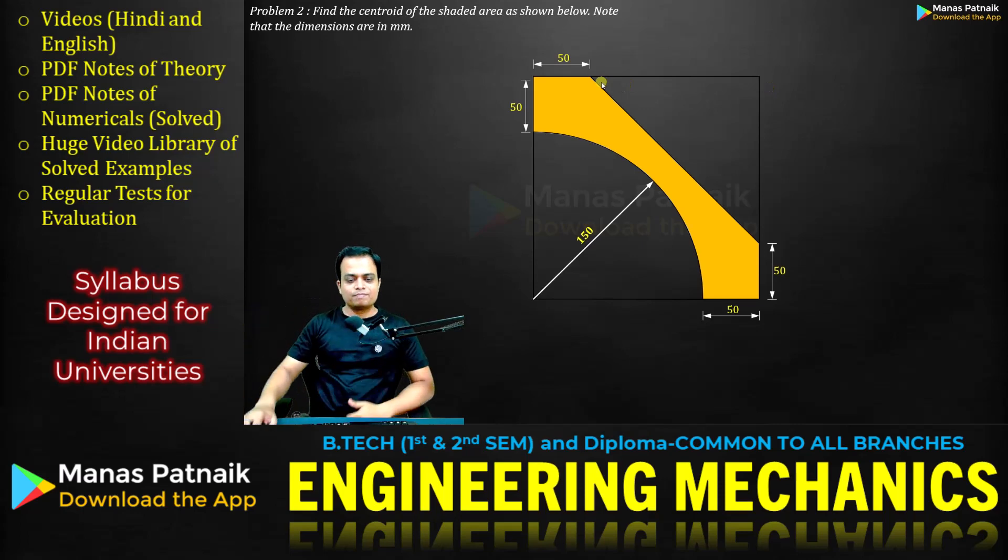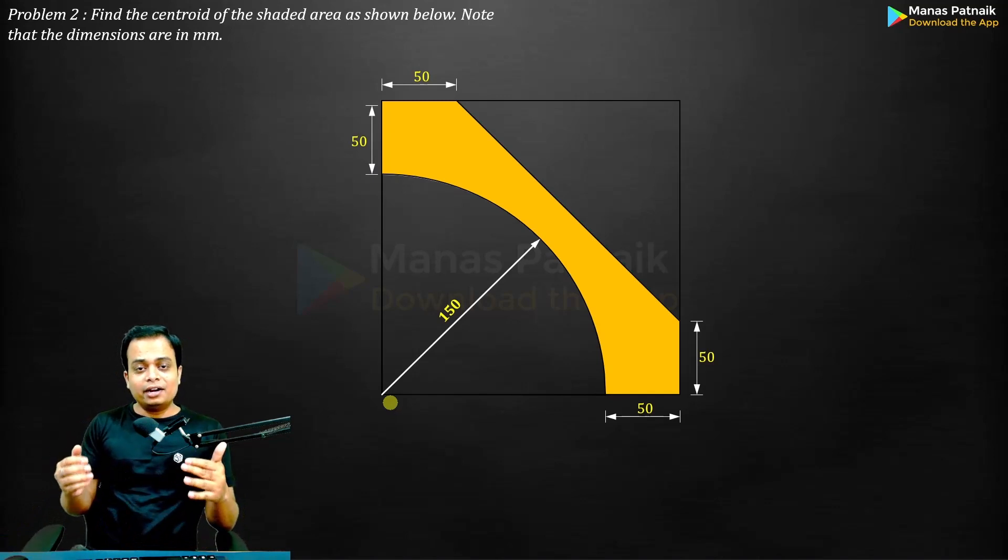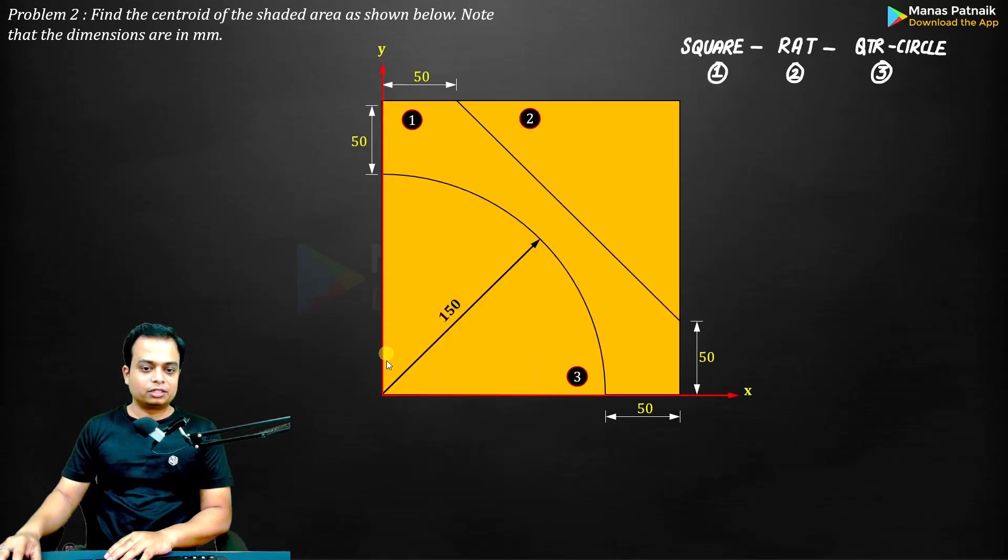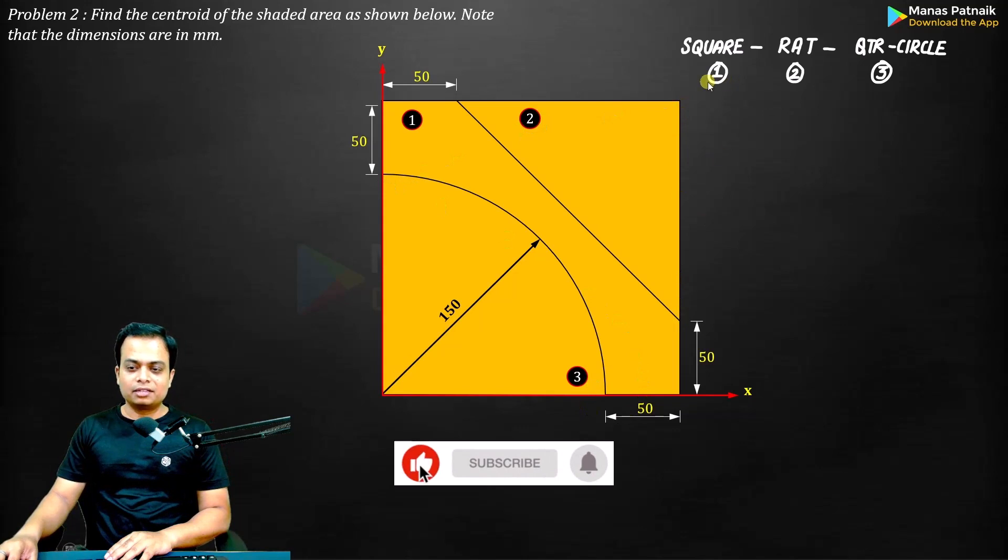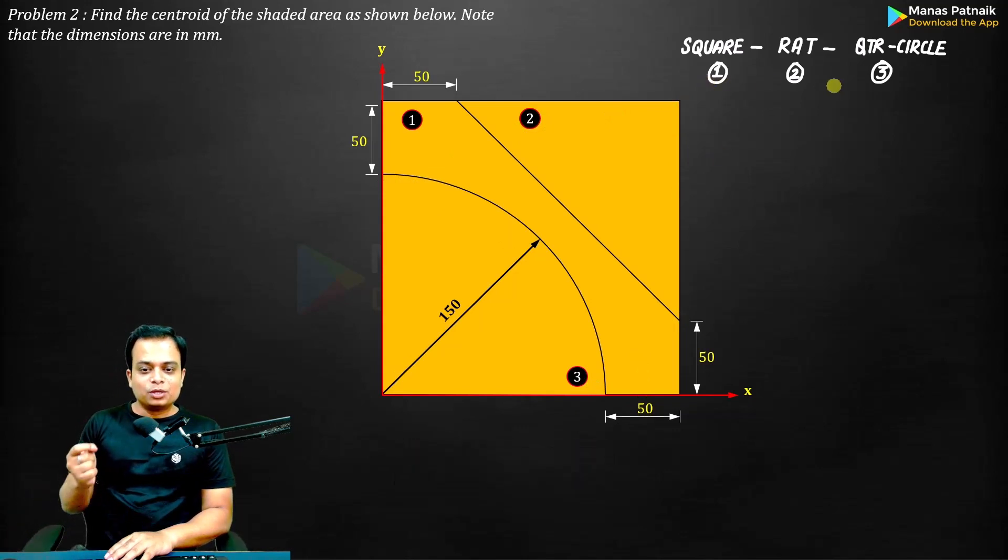Also a quarter circle seems to be chipped off. So we are dealing with three common plane shapes: number one being a square, from which we are going to chip off a right angle triangle marked as two, and a quarter circle marked as three. That is exactly what I have written over here.